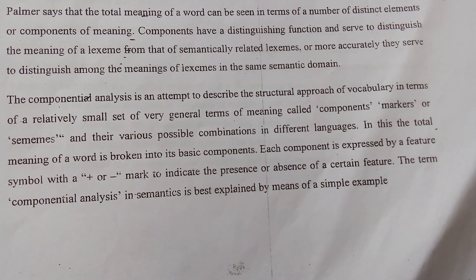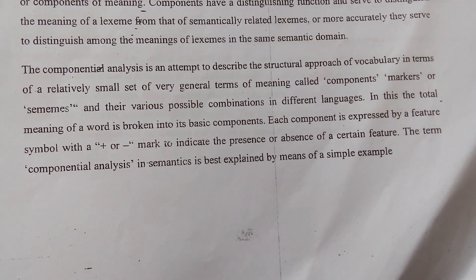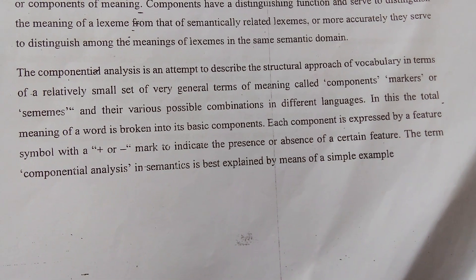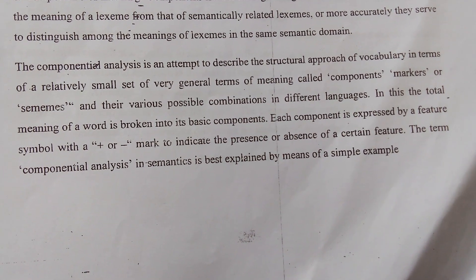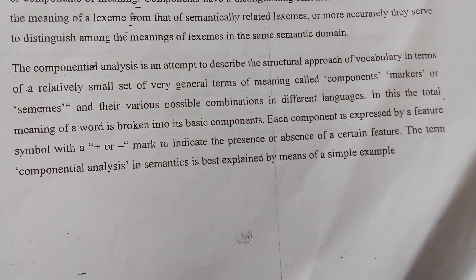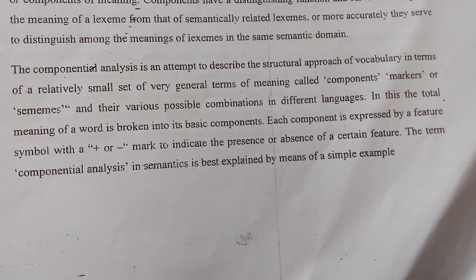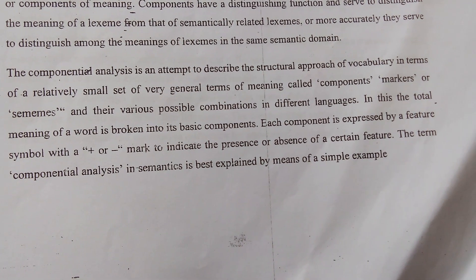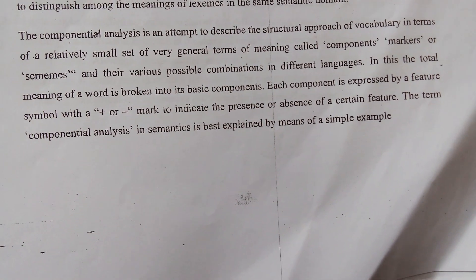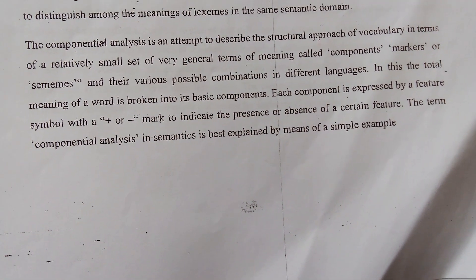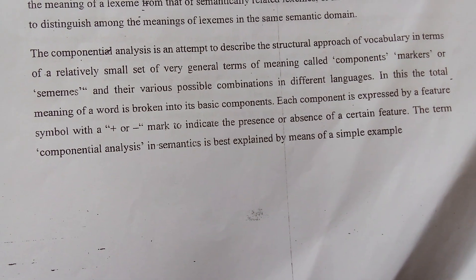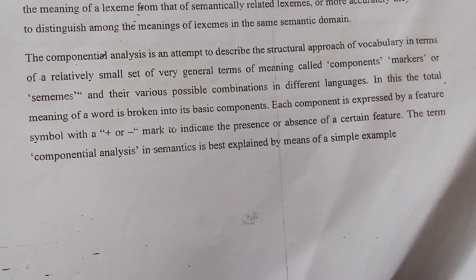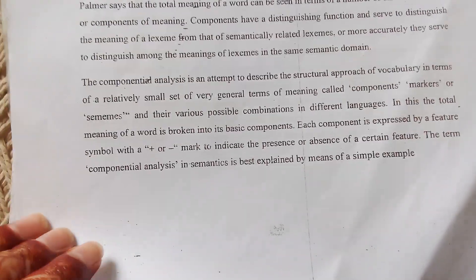In their various possible combinations in different languages, the total meaning of a word is broken into its basic components. Each component is expressed by a feature symbol with a plus or minus mark to indicate the presence or absence of a certain feature. The term componential analysis in semantics is best explained by means of a simple example.